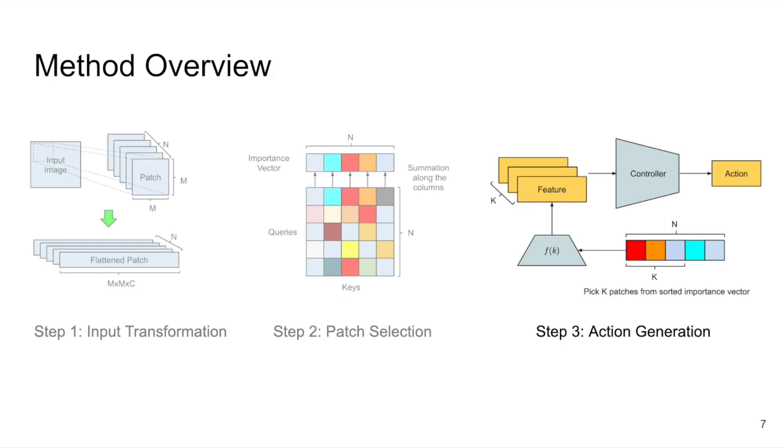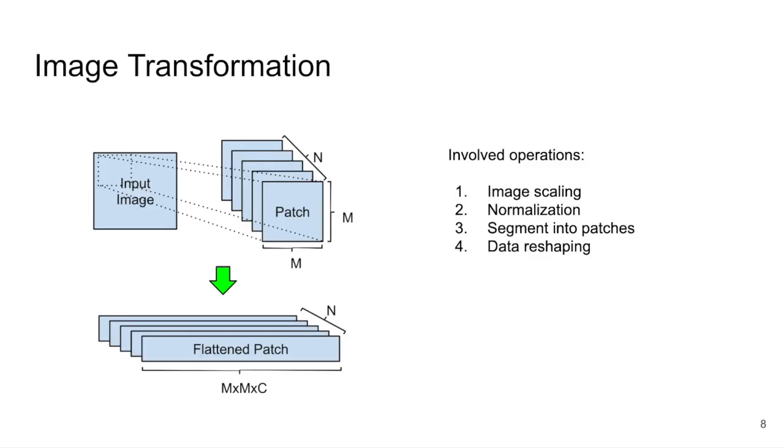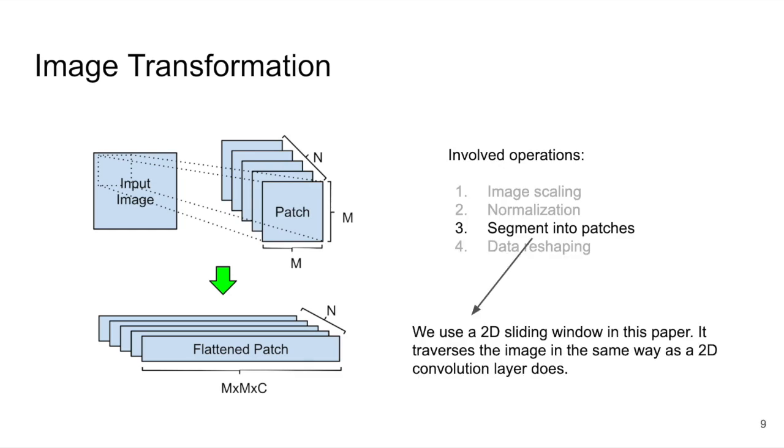In the next few slides, I will talk about the details of each of these steps. The operations involved in the image transformation step are mostly straightforward. As a net effect, this step organizes a single RGB image into a batch of n flattened image patches, where n, the number of patches, depends on the image segmentation method. In this paper, we use a simple 2D sliding window, which is identical to how a convolutional layer sweeps over an input image.